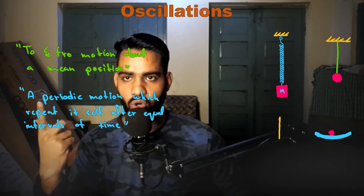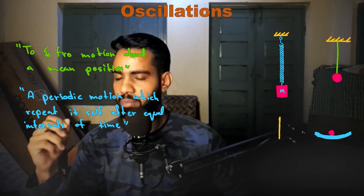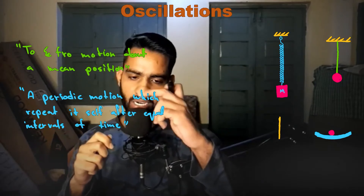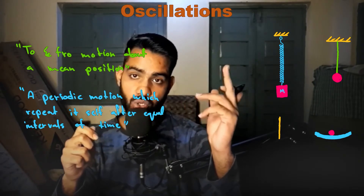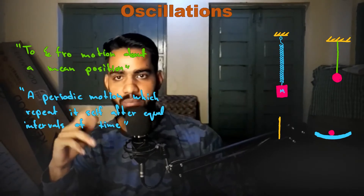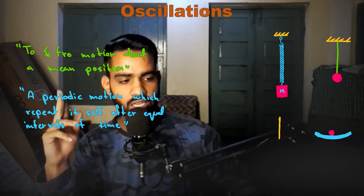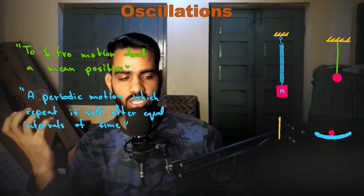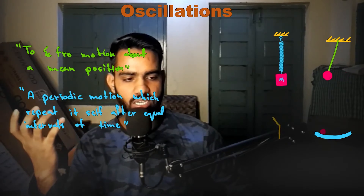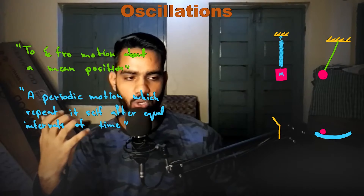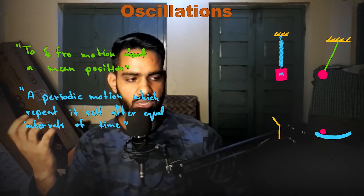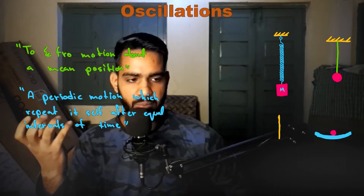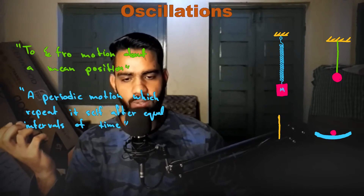If we have a tuning fork or a flexible scale, they too vibrate about an extreme position — we call this oscillation. This is what oscillation is.